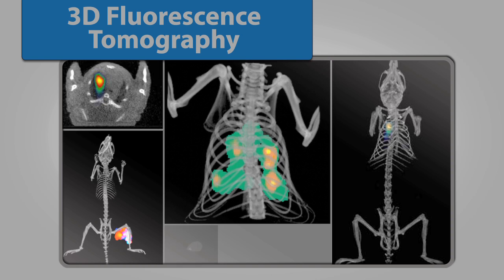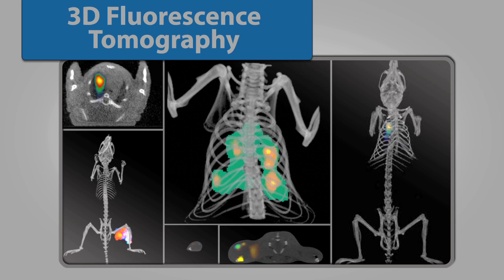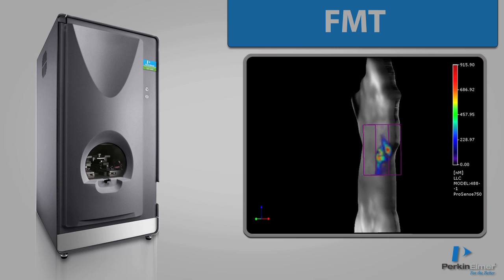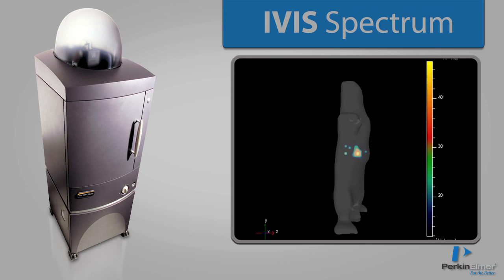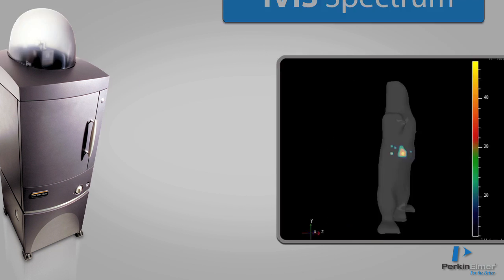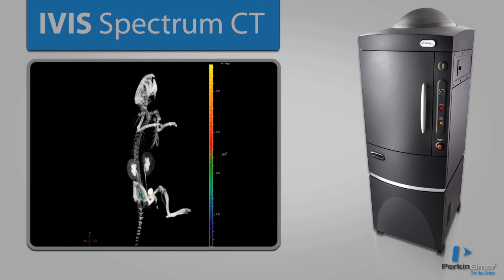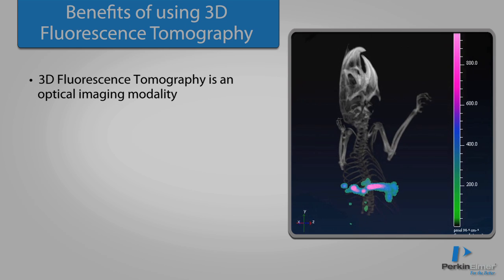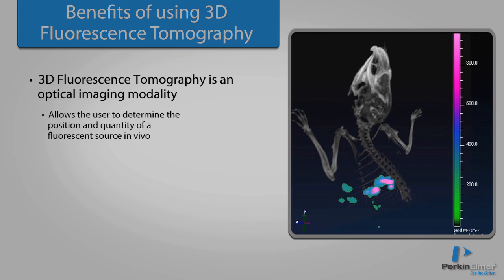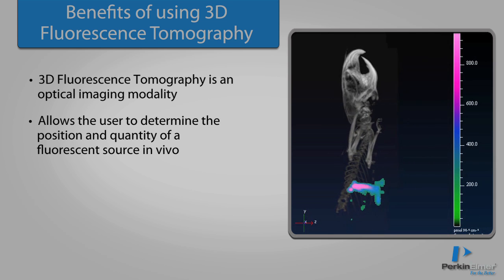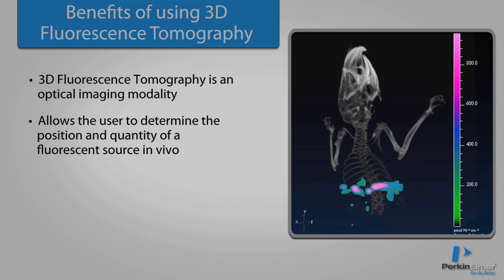3D fluorescence tomography is available on Perkin Elmer's FMT, IVIS Spectrum, and IVIS Spectrum CT preclinical in vivo imaging instruments. It is an optical imaging modality that allows the user to determine the position and quantity of a fluorescence source in vivo.